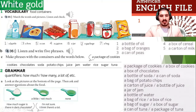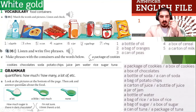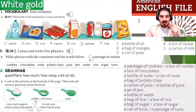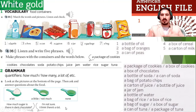Now everybody — grammar: quantifiers. How much, how many, and a lot of, etc. Look at the pictures at the bottom of the page, then ask and answer questions about food. For example: a lot, a little, not much, none. How much sugar is there in dark chocolate? I'm not sure — I think there's a lot. Ask about the food using how much and how many.